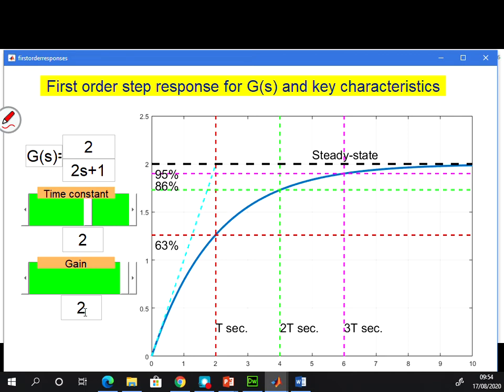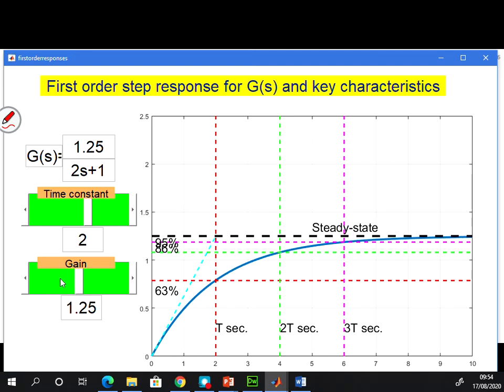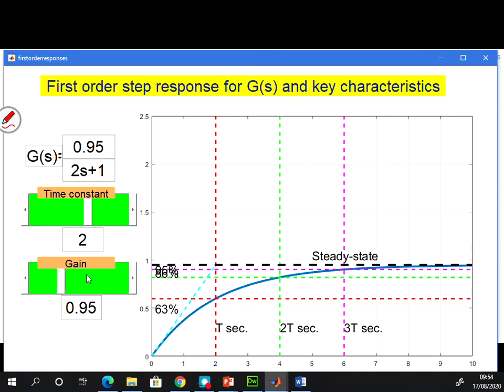Now what about this parameter gain? At the moment I've said the gain is two and you can see I'm converging to a steady state of two. If I reduce the gain, can you see how the steady state comes down and down and down with the gain?